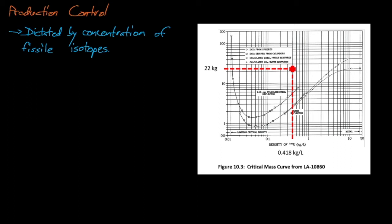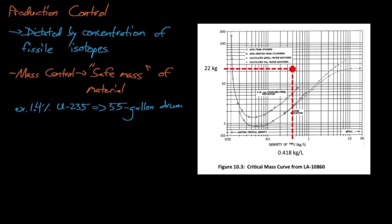So how can we control for the fissile isotope inventory? Mass control and volume control are two ways of doing this. Through mass control, we seek to control for the mass of fissile material that can actually fit into an area. For example, if we work in a facility that processes and ships 1.4% enriched uranium dioxide powder, and we know that it's impossible to pack enough 1.4% enriched powder into a 55 gallon drum to reach criticality, then we might choose to limit the size of the containers in the facility to 55 gallon drums to assuage any criticality concerns.